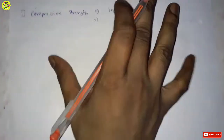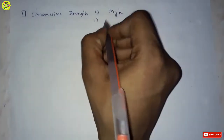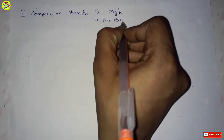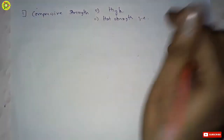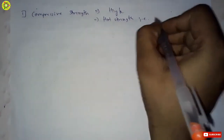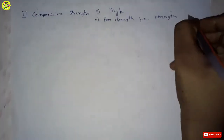Compressive strength should be high for tool steels. Tool steels which are used for hot dies should have hot strength, that is strength at high temperature.